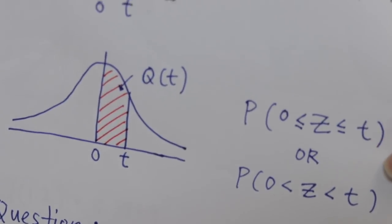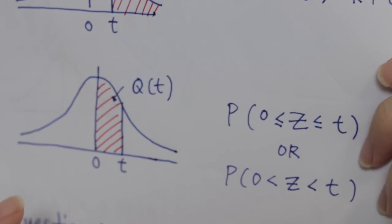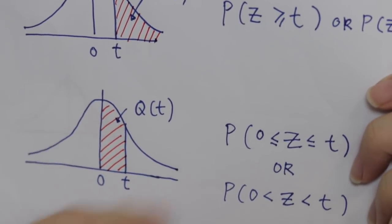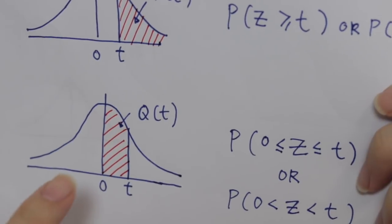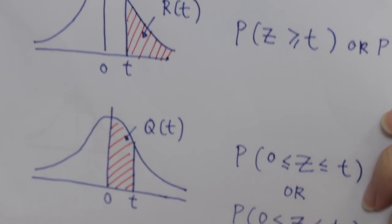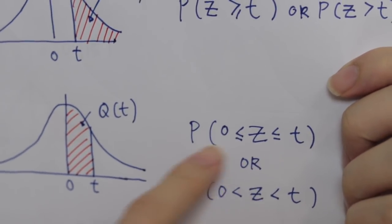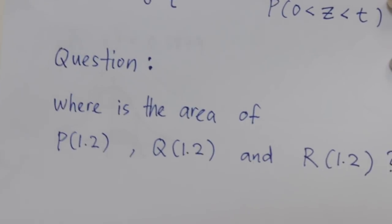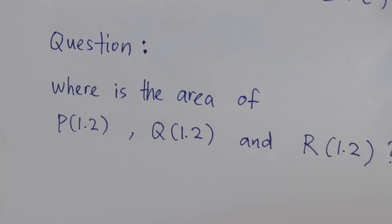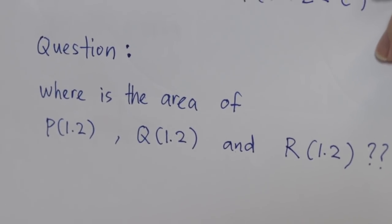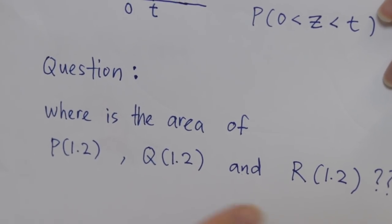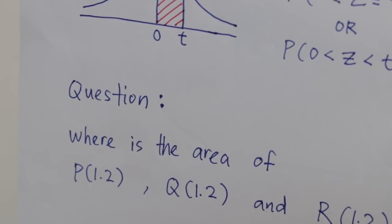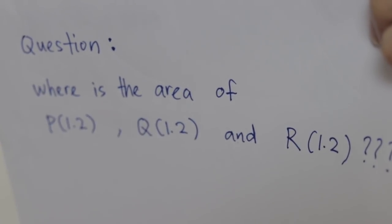Q is something quite special. The value of Q is basically from zero up to T. When finding the Q value, you always start from zero to either the positive or negative value of T. In the question you will see the inequality: Z is between zero and T. Now here is a quick question — where is the area if I type P 1.2, Q 1.2, and R 1.2? Try to imagine by yourself, using the same value so you can fully understand.